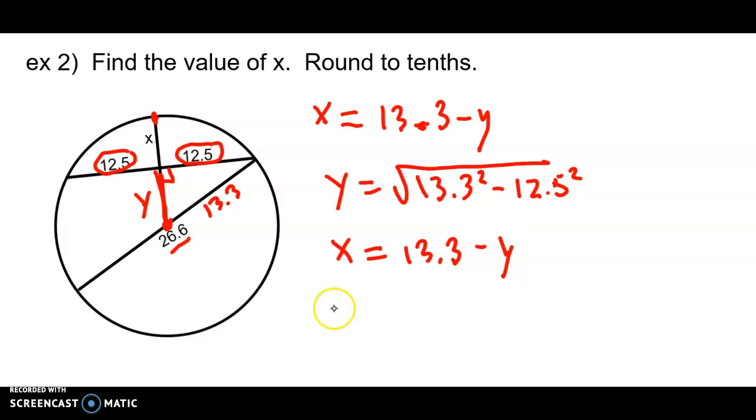And then X will be 13.3 minus Y. I'm going to let you do those calculations. And you should come up with X equals 8.8 when you round to the nearest tenth. 8.8 is the answer that we're getting. X equals 8.8.